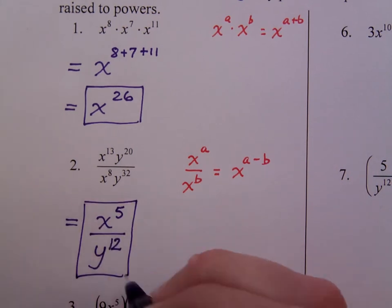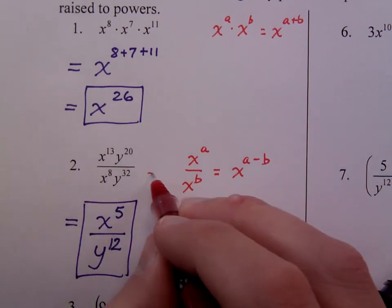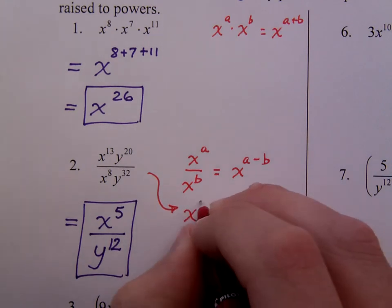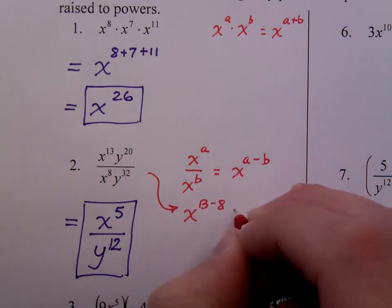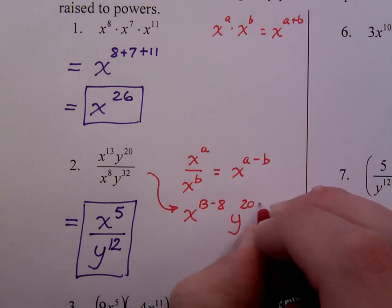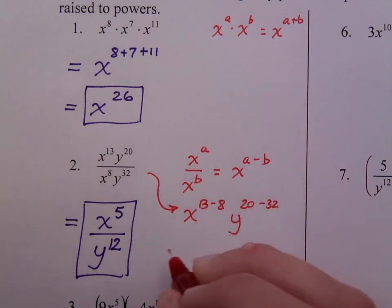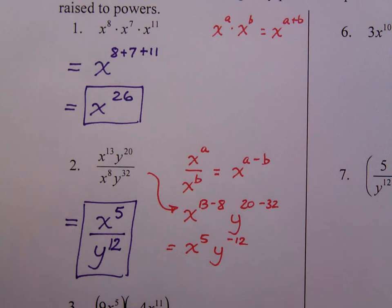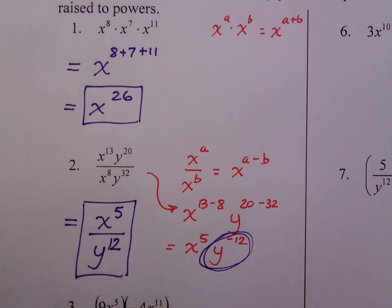Now, if you were to do this using the quotient rule, this would be x to the 13 minus 8 and y to the 20 minus 32 power. So this gives you x to the 5th and y to the negative 12th. But as you recall, we don't leave negative exponents. And so this guy would go into the denominator like this. So it still works out the same.